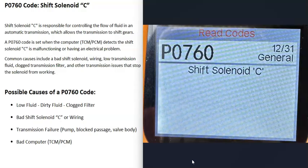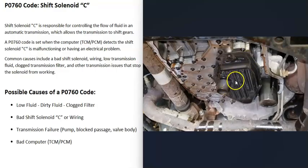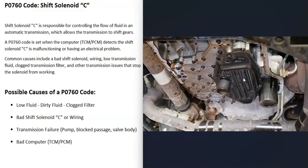Some possible causes of a P0760 code: the first thing to do, if possible, is check the transmission fluid and be sure it's at the right level. Many vehicles nowadays no longer let you check the transmission fluid — there won't be a dipstick. But if you can, check it and be sure it's at the right level. Also, if that fluid is really dirty, that can affect the transmission. There's a filter inside the transmission that should be changed regularly. If that fluid's really old or dirty, or if the filter gets clogged up, that's going to cause problems. So the first possible cause is low fluid, dirty fluid, or a clogged filter.